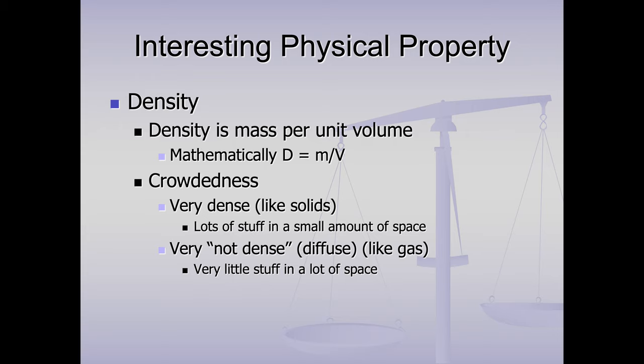I want to spend a moment talking about an interesting physical property. Density is a physical property. It's the mass per unit volume, mathematically for those of you who are math people, D equals M over V. It's kind of crowdedness. So things that have high densities, they are a lot of stuff. The mass is high, but the volume is low. A lot of stuff in a small amount of space. So solids have high densities. Things that are very diffuse, not dense, would be like gases. Particles are very far apart. They're going to be a very small number. So to put it in perspective, solids have densities of 2, 3, 5, 10. Like gold has a density of 12. Air, a density of 0.001.